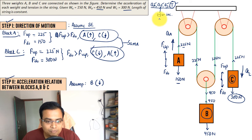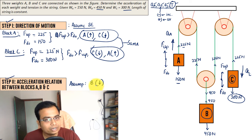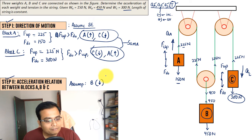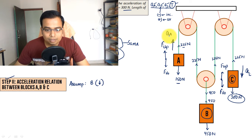We assume block B moves in the downward direction and carry out the entire analysis. If acceleration a_B works out with a positive sign, the assumed direction is correct; if negative, the direction was incorrect. At the end of the video, there's also a solution where block B is assumed to move upward — the final answers will be the same either way.